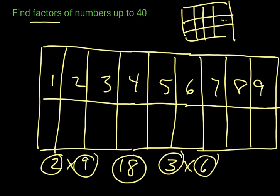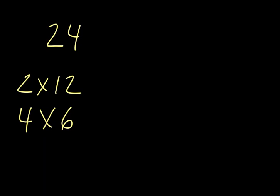For example, if we had 24, what numbers will go into 24 evenly? When I multiply them together they give you 24. We could say two times 12 gives us 24, we could say four times six gives us 24, we could say three times eight is 24.